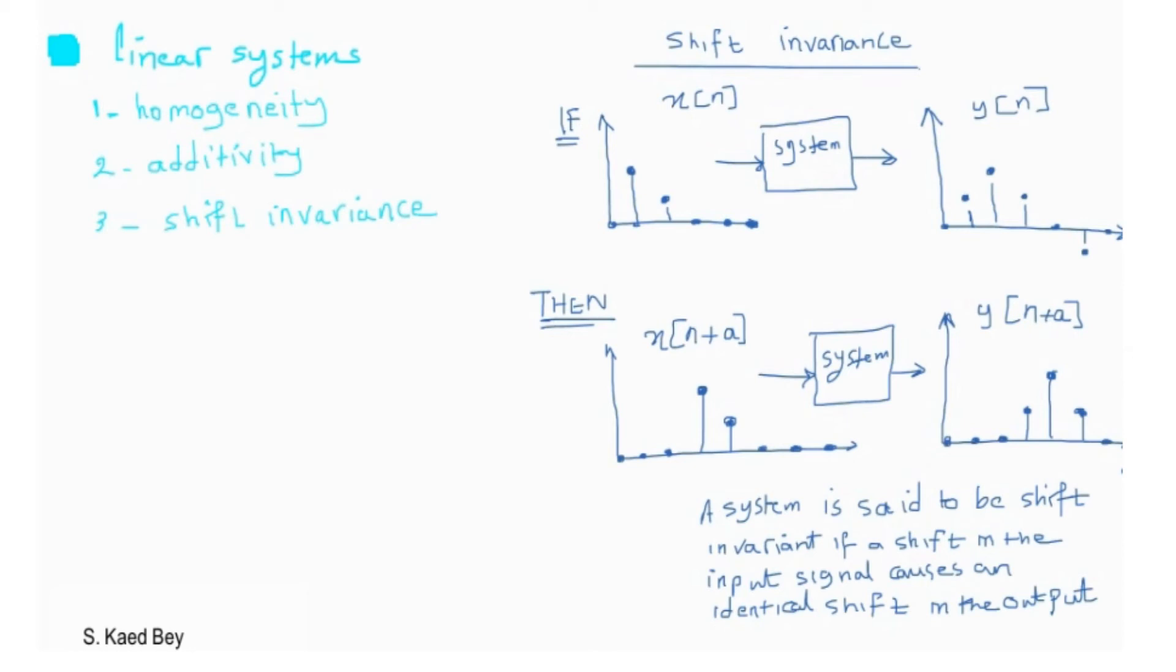In conclusion, shift invariance can be thought of as an additional aspect of linearity. This is needed when signals and systems are involved. The three properties discussed previously, homogeneity, additivity, and shift invariance, are important because they provide the mathematical basis for defining linear systems.